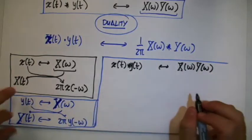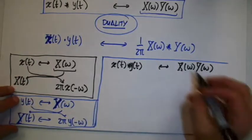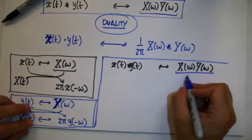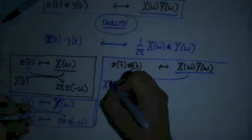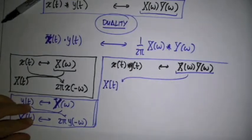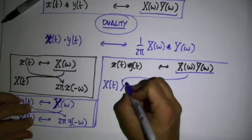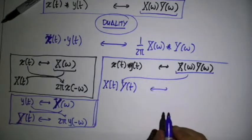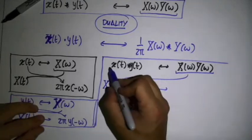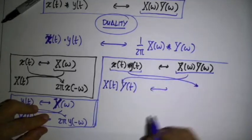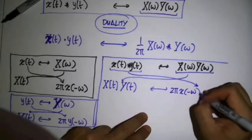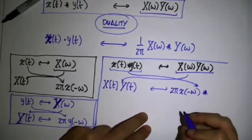Now if I can exploit the same duality property, what do I do? I take this Fourier transform and I make it a function of time. And the correspondent Fourier transform comes from this, and it's going to be equal to 2π x of minus omega convolved with y of minus omega.